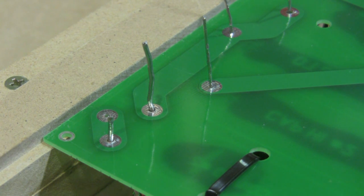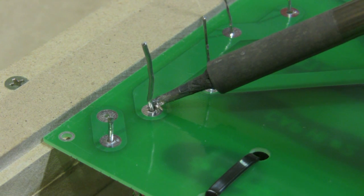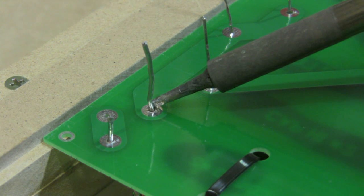When you go to solder you want to make sure to apply pressure with your iron to both the pad on the board and the wire itself at the same time. This allows them to both heat up and the solder to flow to both giving you a reliable connection.